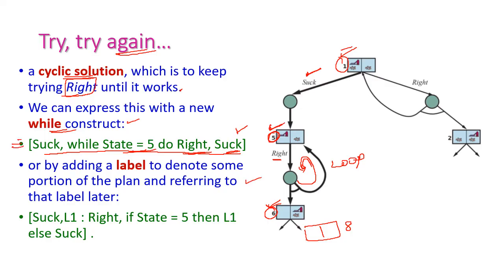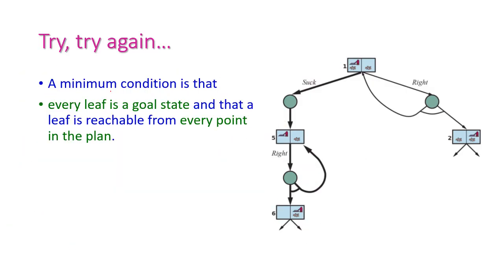We can rewrite this using a label — suck, L1 — where L1 is a label. The rewrite is: L1: right, if state equals 5 then goto L1, else suck. A label is used to denote some portion of a plan and refer to it later, so no need to rewrite that portion again. In the try-and-try-again tree, the minimum condition is that every leaf is a goal state — just like in the AND-OR tree. The leaf is reachable from every point in the plan, meaning every plan leads to the goal state.